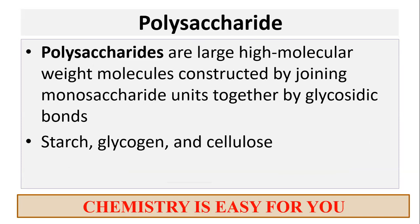Now the next topic is polysaccharides. Polysaccharides are high molecular weight molecules formed when monosaccharides are joined together by glycosidic bonds. I haven't made a sentence for this because it's very clear — if starch, glycogen and cellulose are given, you know it is a polysaccharide. The examples are starch, glycogen and cellulose — SGC. This is simple.